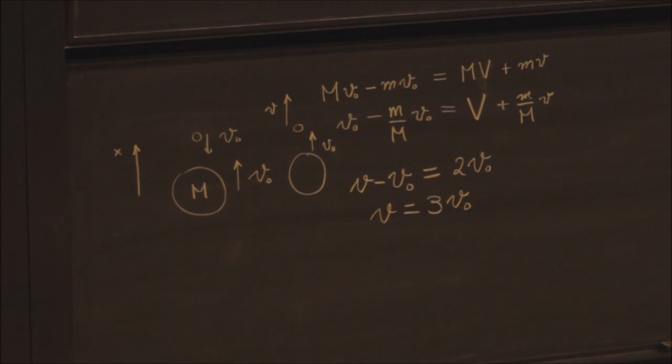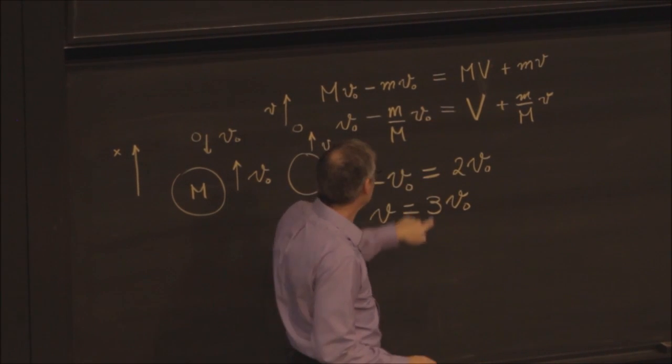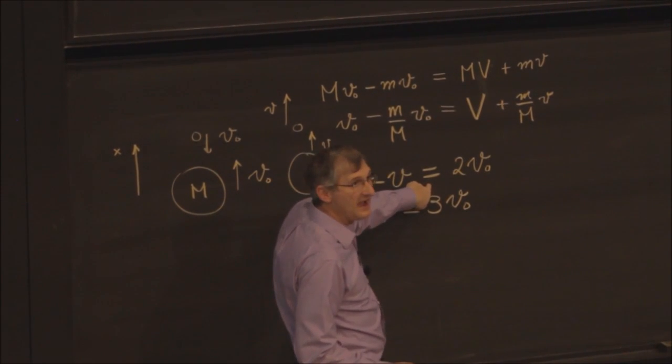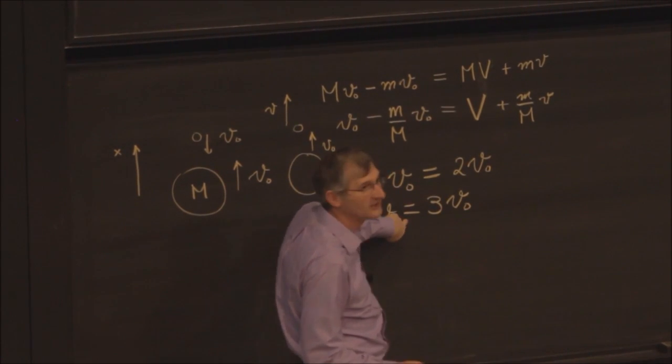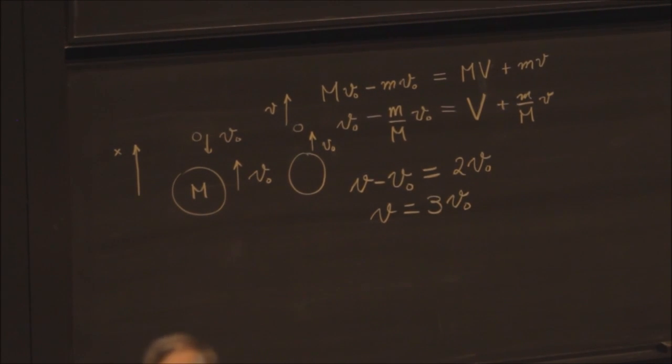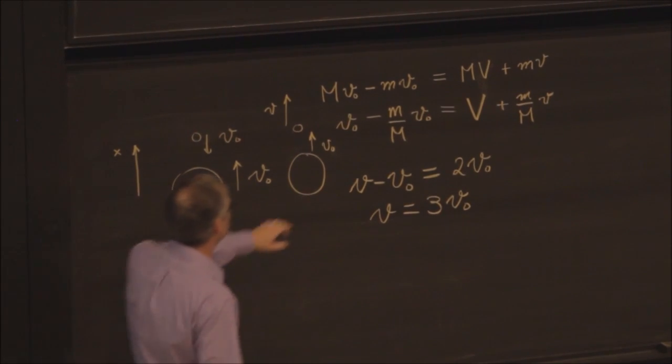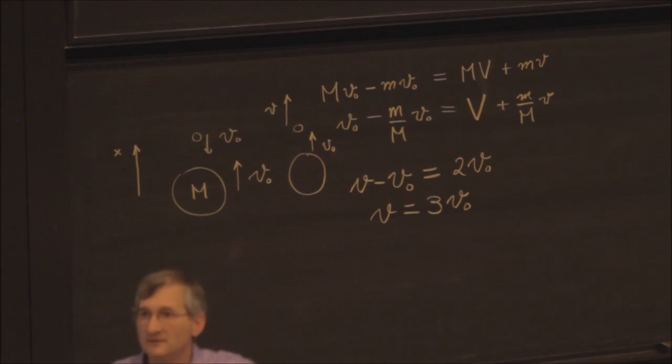Here, the relative speed is 2v0. So therefore, the outgoing speed of the light ball, the ball with small mass, must be 3 times v0. About. OK. Now, I've fudged things, right? I shouldn't be putting—this is a good equal sign, right? But by the time I get down to here, it's going to be relying on my ability to neglect the difference between—well, that I can set the mass ratio to go to 0. OK? There was a question.